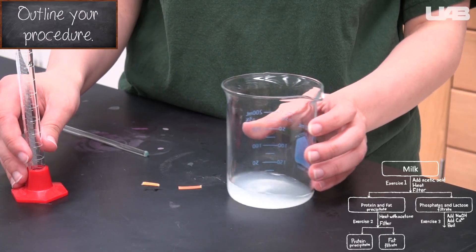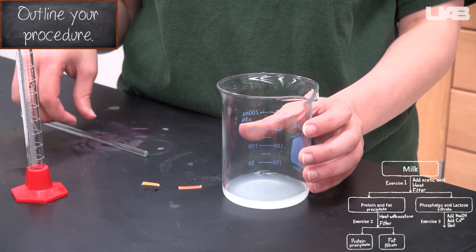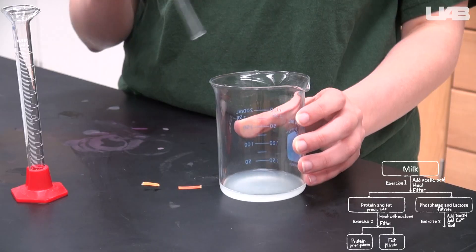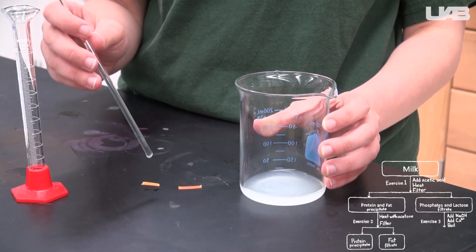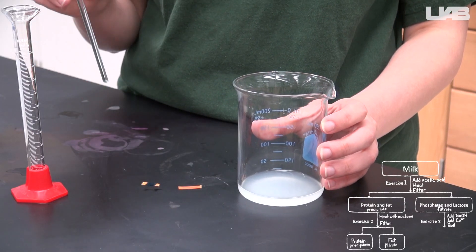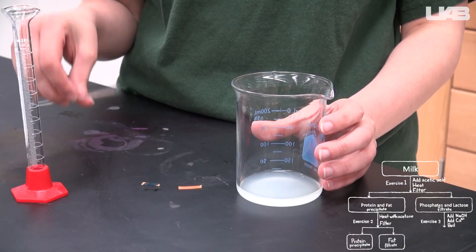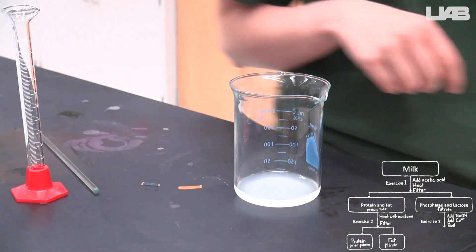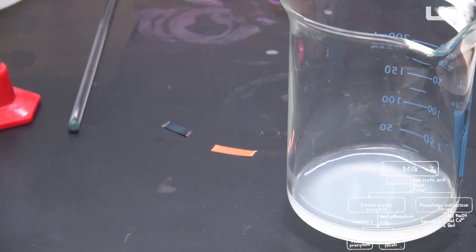Test the pH again to ensure that it has become basic and turns the litmus paper blue. You may have to add more sodium hydroxide if it is still acidic. Add a 1 milliliter portion of sodium hydroxide and retest. Keep doing this until you get blue litmus paper.